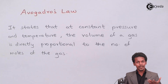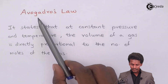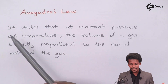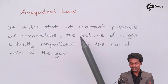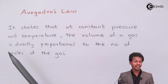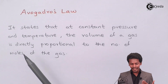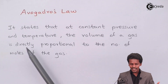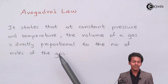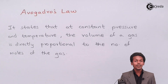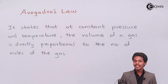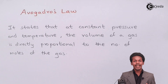So what does it mean? Avogadro's Law states that at constant pressure and temperature — these two factors are being kept constant — the volume of a gas is directly proportional to the number of moles of the gas. The volume of the gas will be directly proportional to the number of moles of the gas present in that situation.